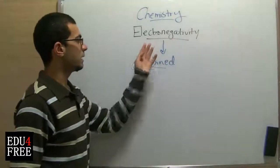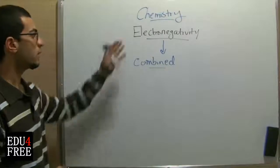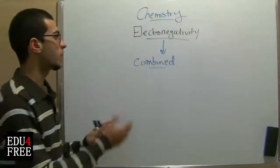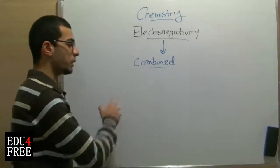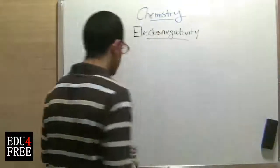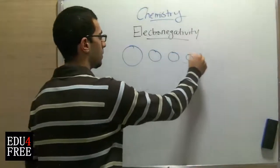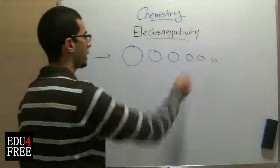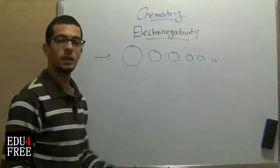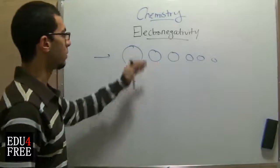The electronegativity is expressed by values, so the higher the value of the electronegativity in an atom, the higher its ability to attract more electrons. In the periodic table, as we go from left to right in horizontal periods, we can notice that electronegativity increases by increasing the atomic number and decreasing the atomic radius.